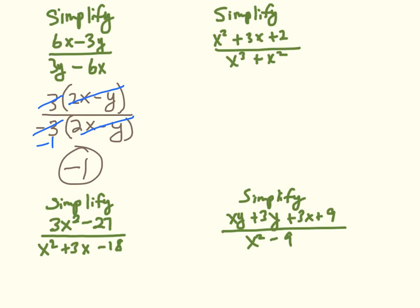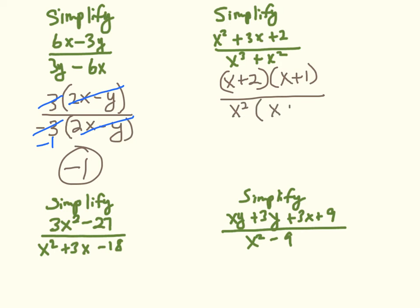The next problem: I factor the numerator — factors of 2 that sum to 3 give (x plus 2)(x plus 1). I factor out x squared from both terms of the denominator, giving x squared times (x plus 1). I've identified a common factor of (x plus 1) — that's all I can cancel — leaving (x plus 2) over x squared.